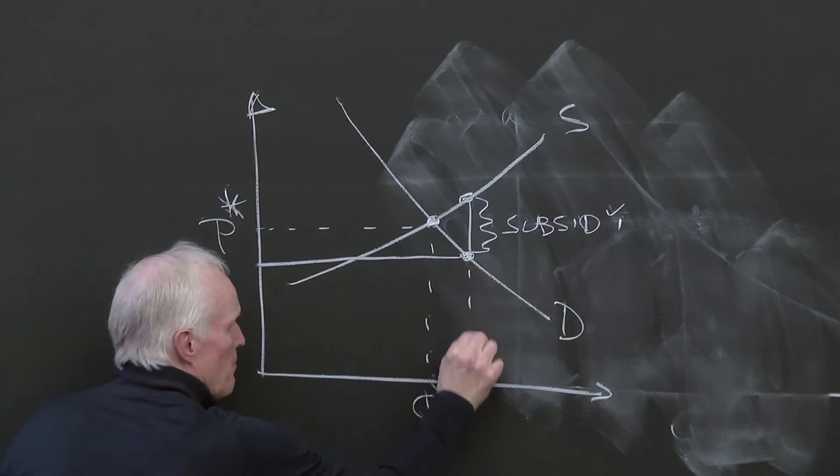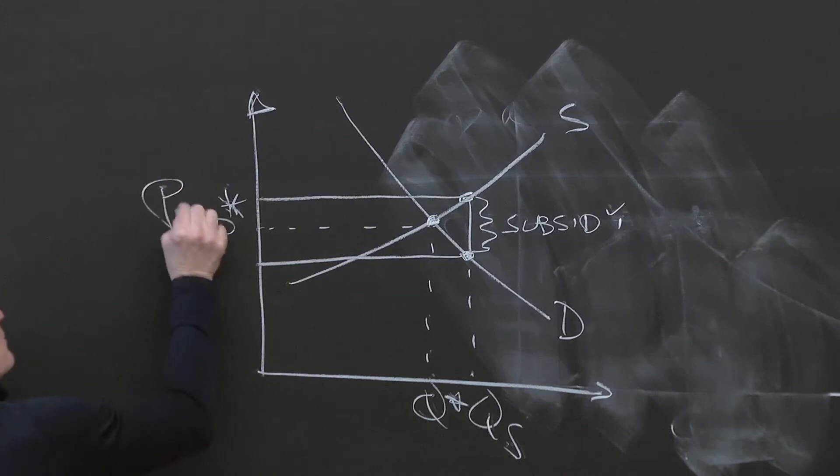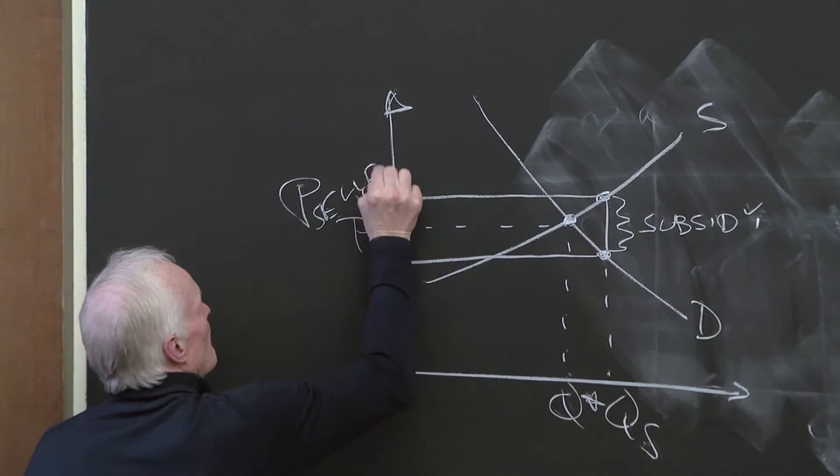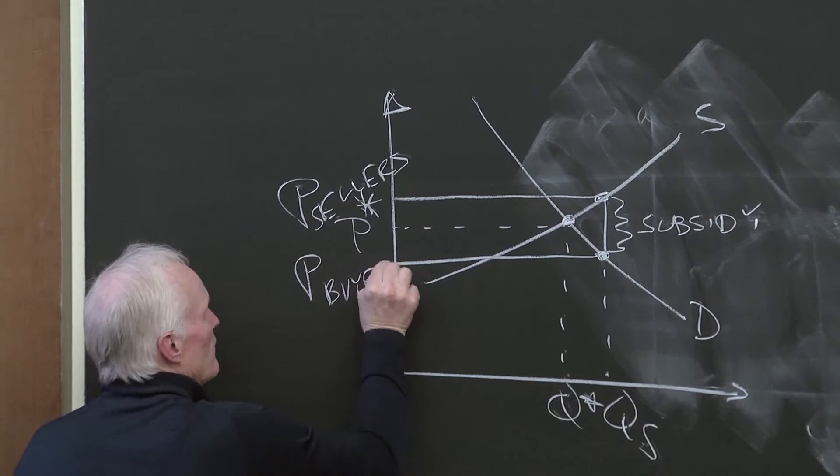And that leads to a higher equilibrium output, QS, price to the buyers up here - I mean, probably price to the sellers up here, price to the buyers down here.